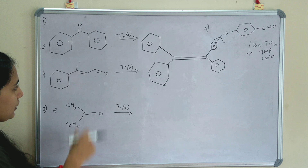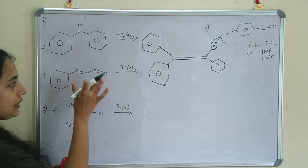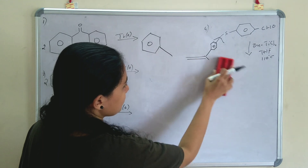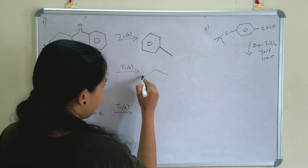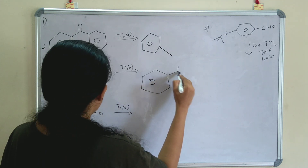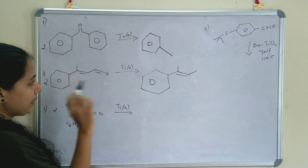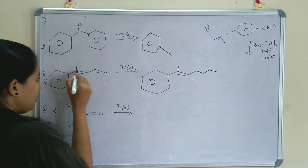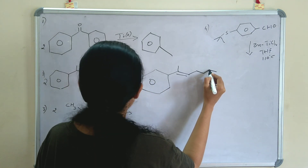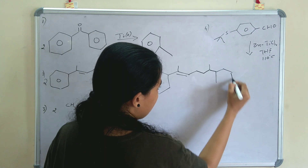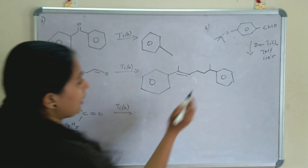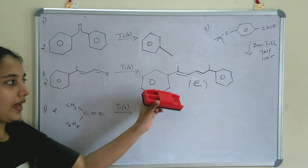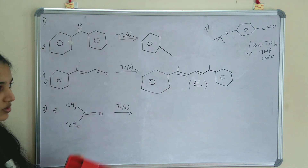Coming to the second problem, this is an aldehyde, and we are coupling it with itself. To write the product: draw a benzene ring, then a double bond. The C=O is erased, and we attach the carbons — position 1, 2, 3 — with the methyl group at position 2 and the benzene ring at position 3. So this is the product — an alkene is formed. This is an E-alkene, and we know E-alkene is the major product in McMurry coupling.